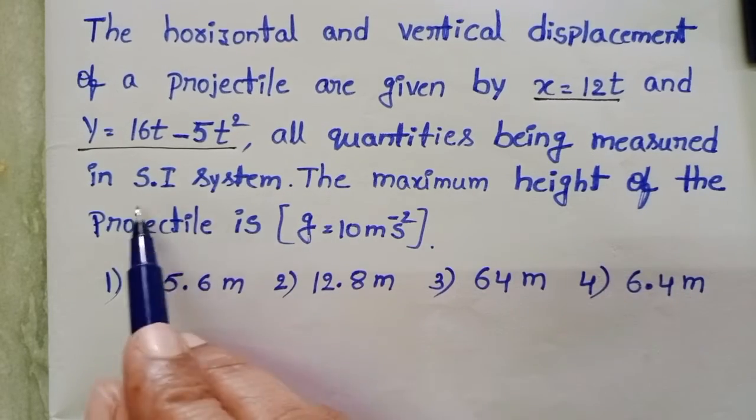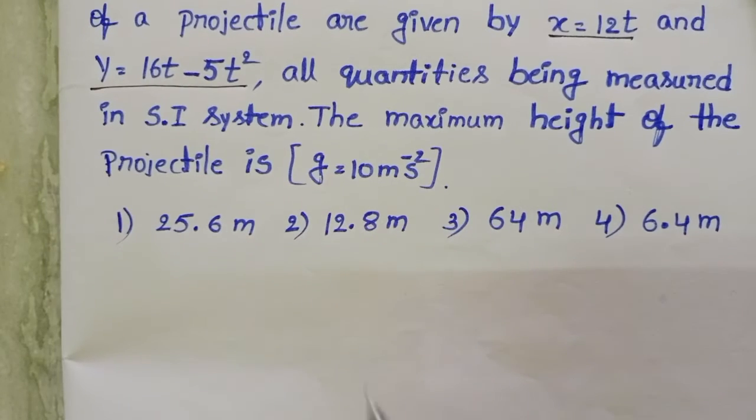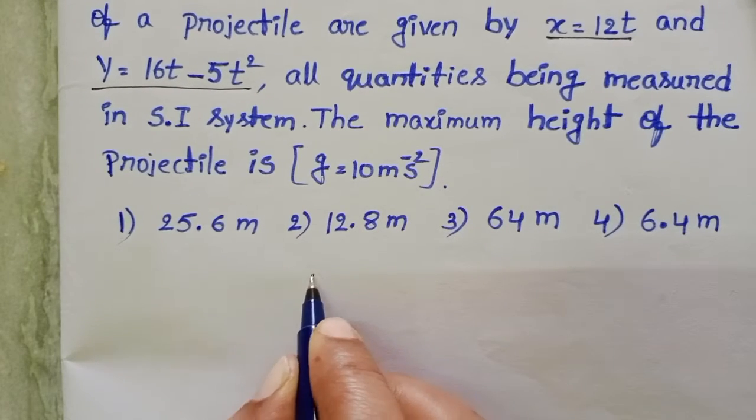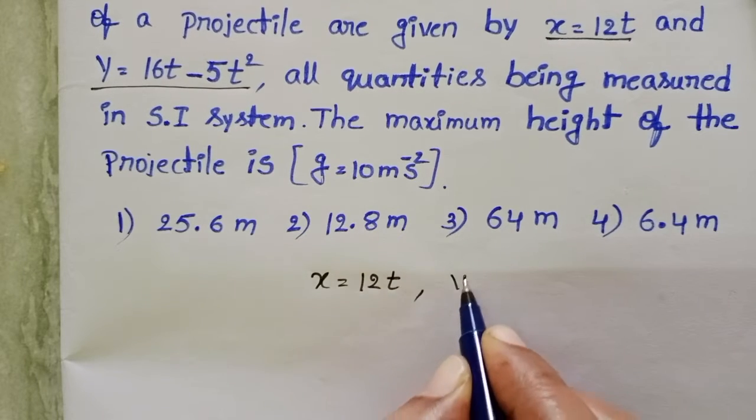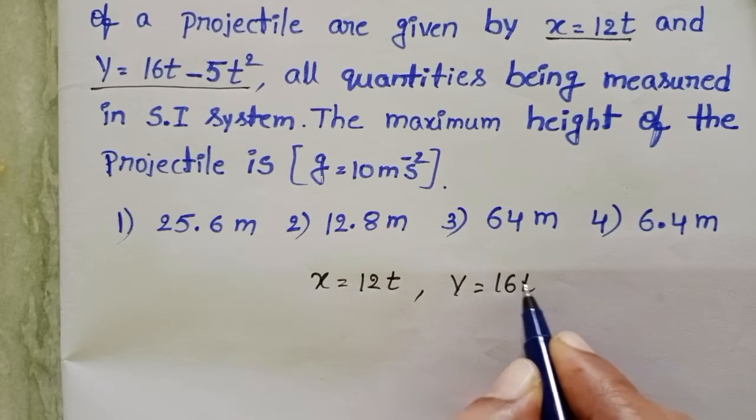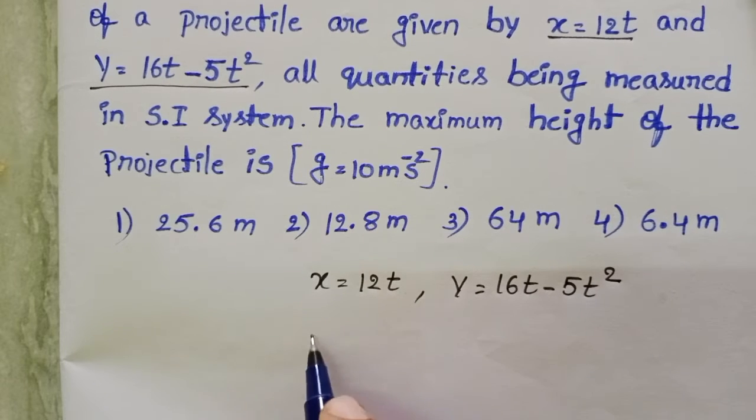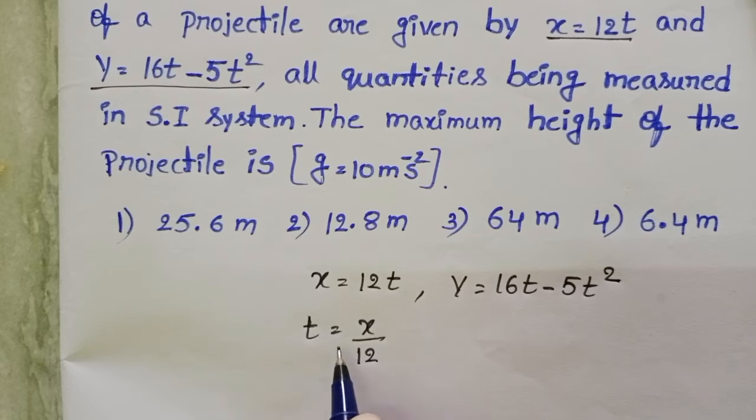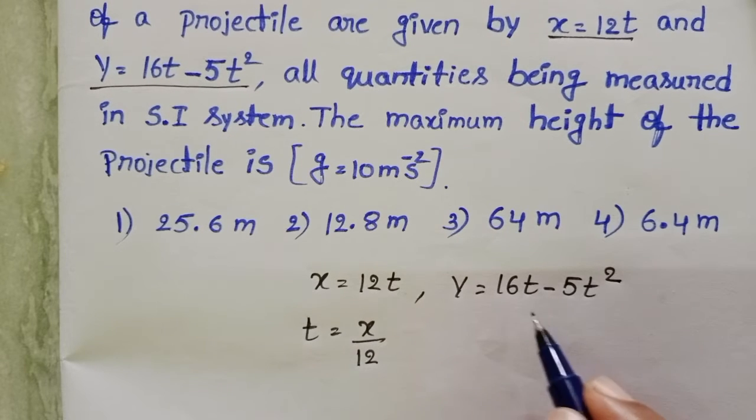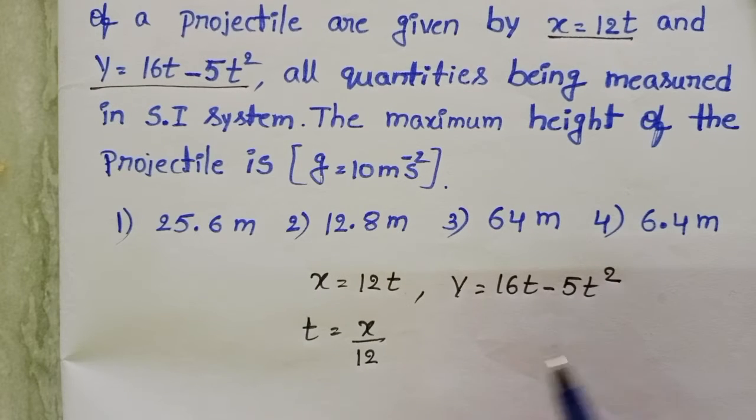All quantities being measured in SI system. The maximum height of the projectile is... From horizontal displacement x equals 12t and vertical displacement y equals 16t minus 5t square, from horizontal distance t equals x by 12. Within the same time the particle takes a vertical displacement also, so substitute t value in y.